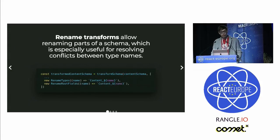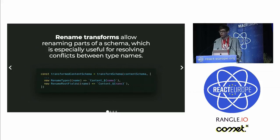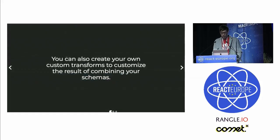The other type of transforms built into GraphQL Tools is called renames. This allows you to resolve a lot of name conflicts. For example, if you query the GitHub API you get a 'user' type, and you have your own 'user' type — you have a conflict. The rename transforms allow you to solve this in a very elegant way.